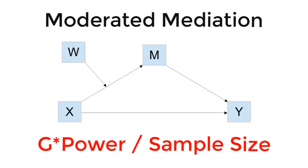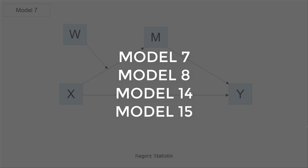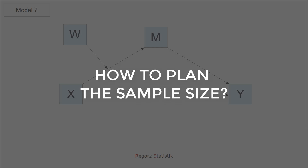How to use GPower to plan the sample size for moderated mediation with Hayes' PROCESS macro. If you want to test a moderated mediation — for instance model 7, model 8, model 14, or model 15 — with PROCESS for SPSS or for R, then you will want to plan the necessary sample size.